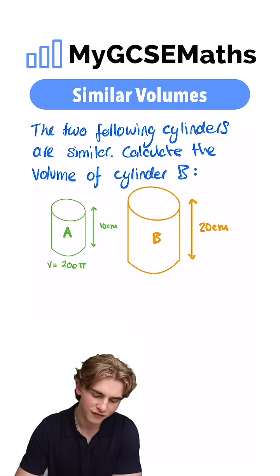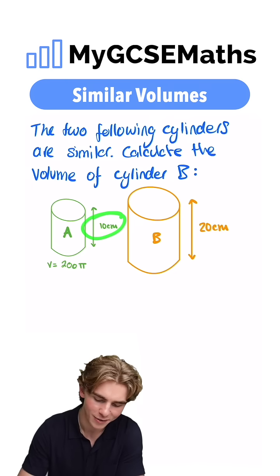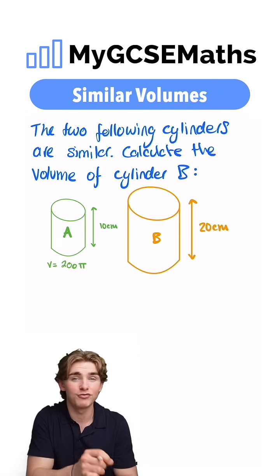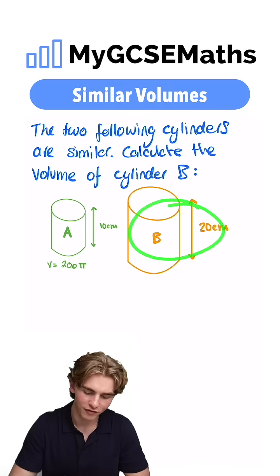What we can do is we can use the heights of A and B to find the ratio of the lengths in the two shapes. Then we can use that to find the ratio of the volumes and use that to find the volume of B.